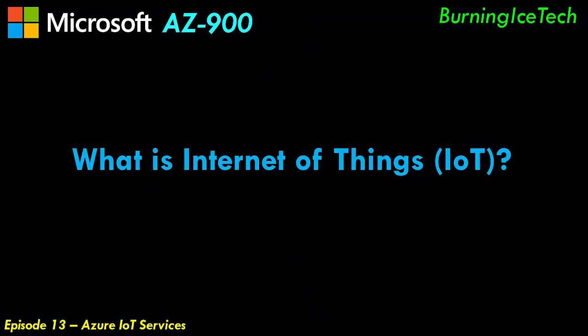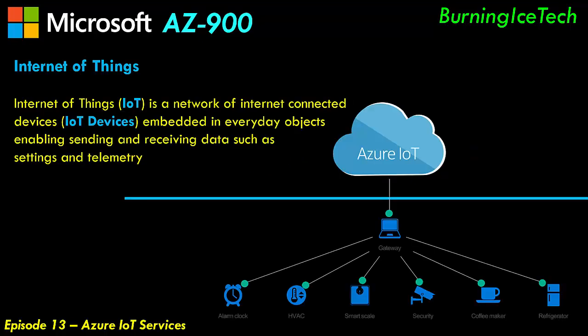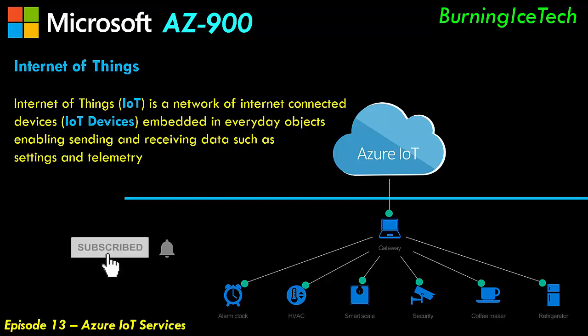What is Internet of Things? Internet of Things is a network of internet-connected devices, which we call IoT devices. Those devices are embedded within everyday objects and they can enable those objects to send and receive data from the cloud, such as settings or telemetry. Most of us have some sort of IoT device at home, you just might not know about it.